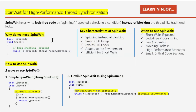Let's first understand what a SpinWait is. SpinWait helps write lock-free code by spinning instead of blocking the thread like traditional locks. SpinWait spins first and then yields CPU when necessary to avoid resource waste. So I've mentioned two things: lock-free code and instead of blocking.